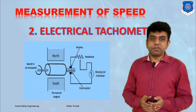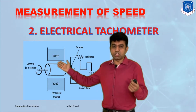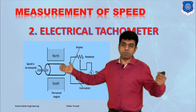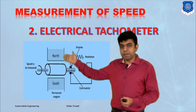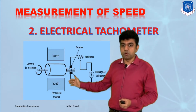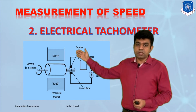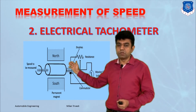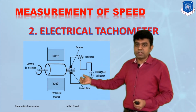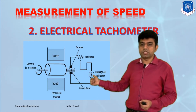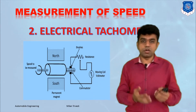The second type is the electrical tachometer. From the amount of electricity generated, we calibrate the speed. The engine shaft is placed between a magnetic field — north and south pole — and is attached to a commutator. As the shaft revolves, it cuts the magnetic field, generating a current. From the value shown on the voltmeter, we calibrate the engine speed.